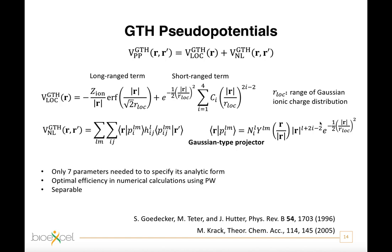Moreover, at most, only seven coefficients are necessary to specify its analytical form. But above all, they have optimal decay properties. All of them have optimal decay properties in both real and Fourier space, from this the name of dual space pseudopotential.